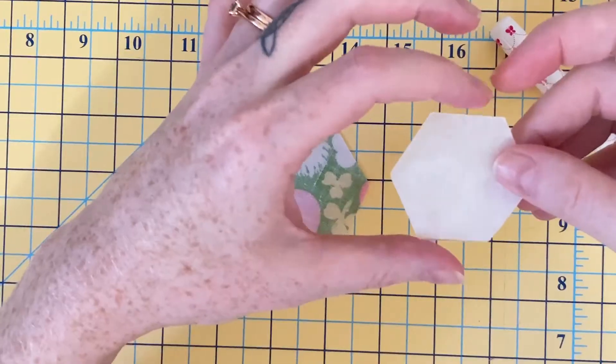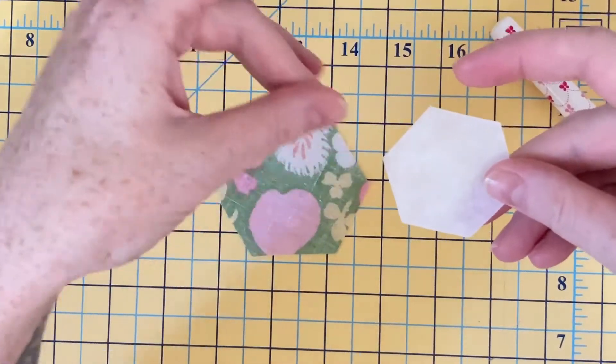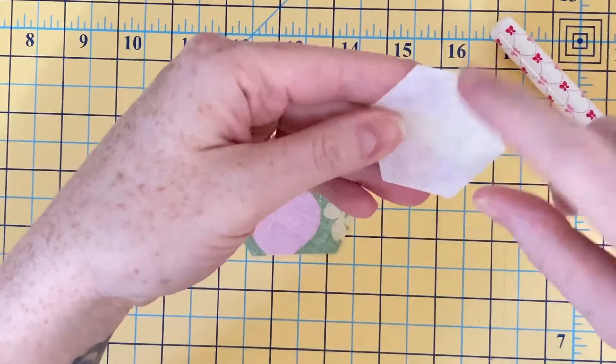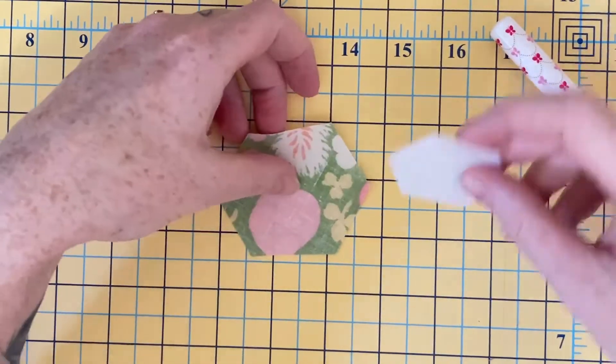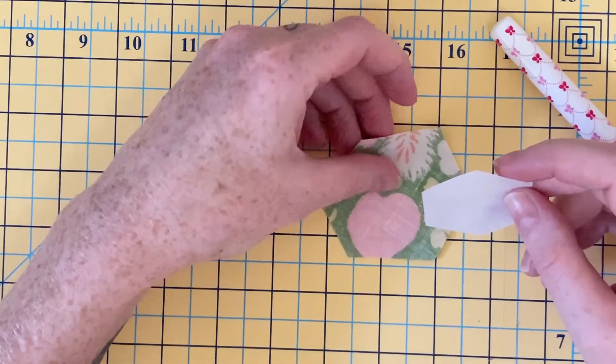I do cut them with my AccuQuilt. And so I'm going to use this in replacement of paper, but you would use this just the same as the paper templates.